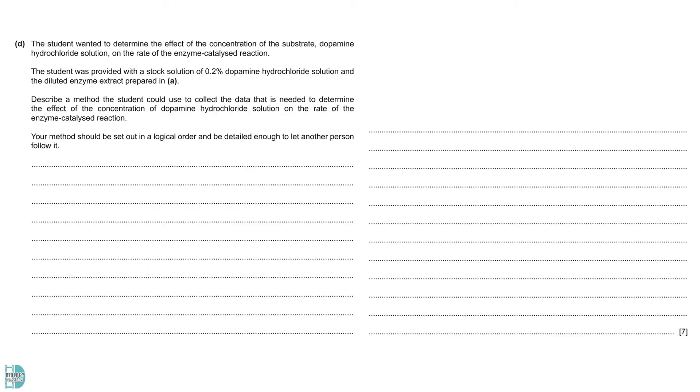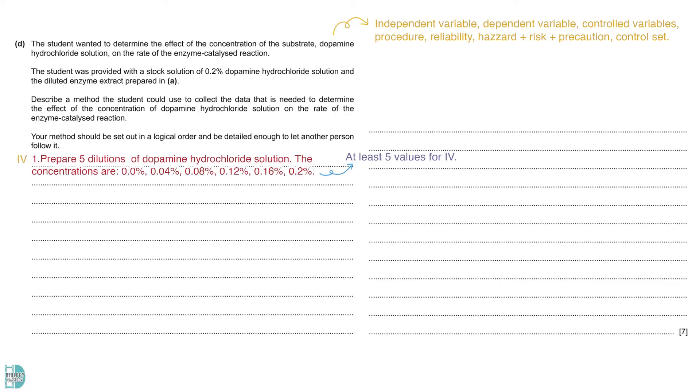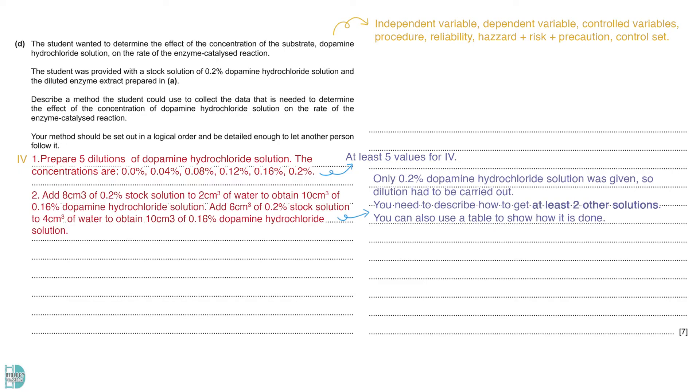In D, we have another experiment to investigate the effect of substrate concentration on the rate of the enzyme catalase reaction. You are asked to describe a method a student could use to collect the data. In a design experiment question, you must describe the three variables, important procedure, reliability, safety precautions, and a control set. List down all the points you want to include, then arrange them in a logical sequence. First, describe how the independent variable is fixed. You should have at least five values for this. The student was only given a 0.2% dopamine hydrochloride solution. So, dilution had to be carried out to obtain the rest of the solutions. You need to describe how to dilute the stock solution to get at least two other solutions. You can also use a table to show how it is done.